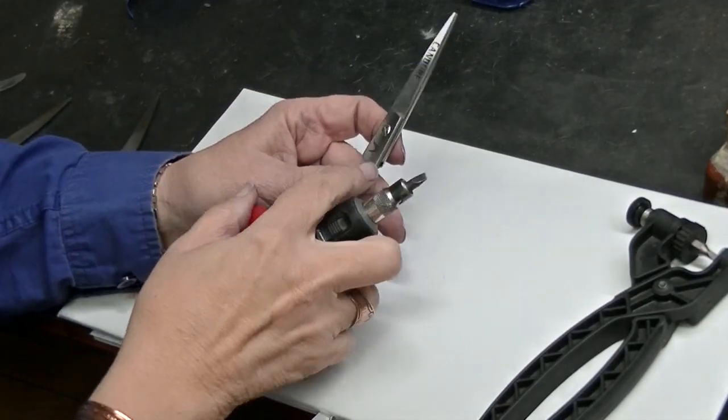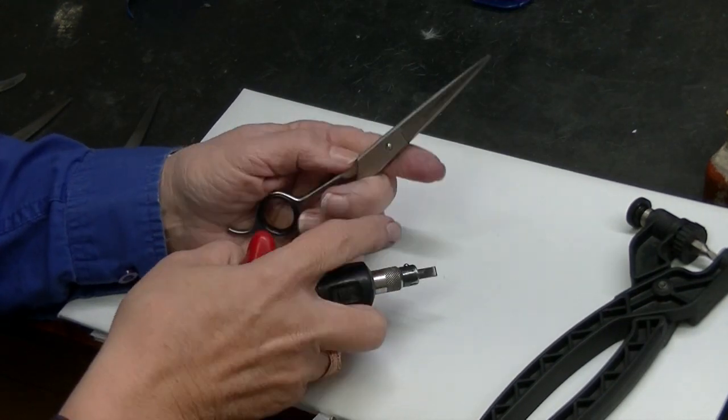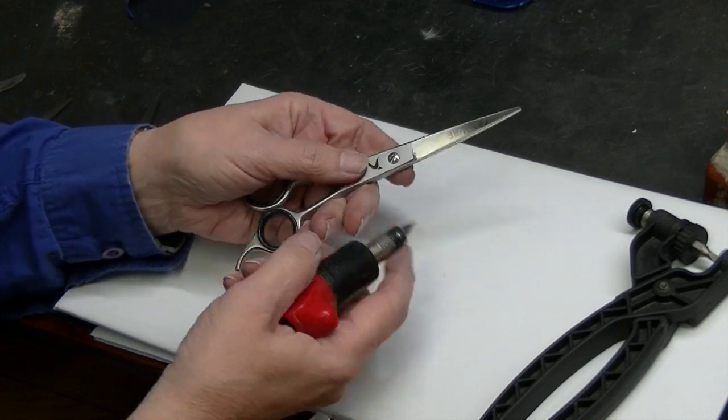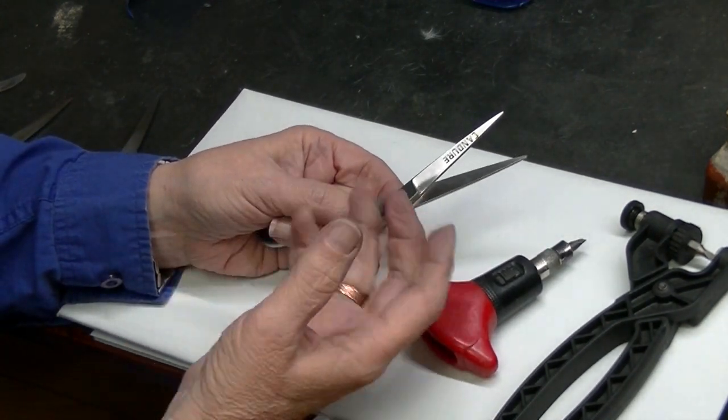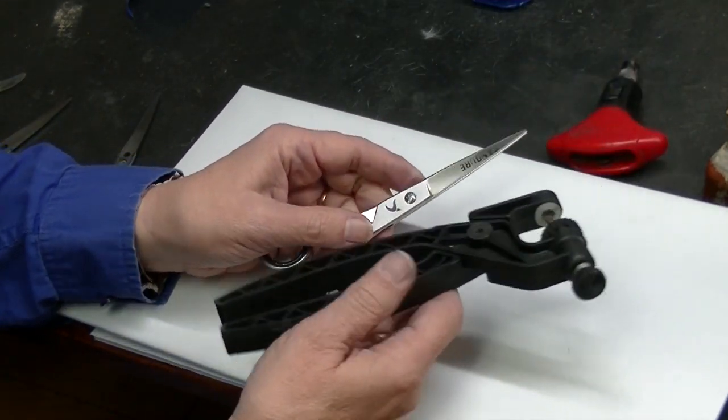Typically when I'm adjusting a screw on a shear that has a regular split screw, I'm just going to use a screwdriver. But sometimes I can't turn the screw with a screwdriver. I need a little extra torque. That's when these scissor pliers come in.